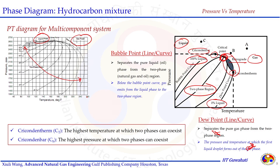The bubble point and dew point curves take the shape of an envelope rather than a single line as in the single component case. Both curves merge at the critical point. The bubble point curve separates pure liquid from the two-phase region — beyond it is only liquid. Below the bubble point curve, gas emits from the liquid phase into the two-phase region. For example, reducing pressure isothermally: the liquid enters the two-phase region as gas dissolved in the liquid emits out. Depending on how much pressure is reduced, the percent of gas emitting from the liquid changes.